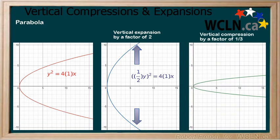Next, apply a vertical compression to the original hyperbola by a factor of one third. Multiply y by 3. This changes the graph accordingly.